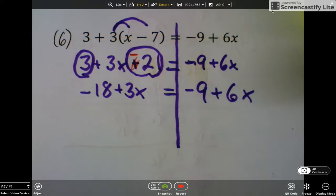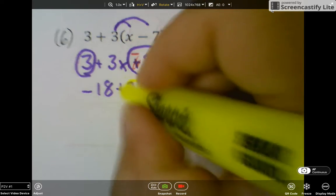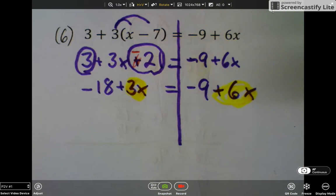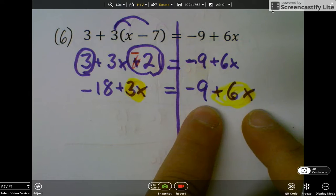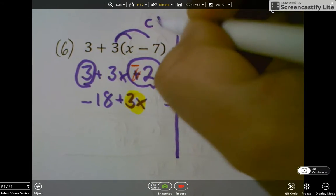Alright, so now the next step I have everything kind of cleaned up. I need to now decide which one's my variable term side and which one's my constant term side. But to do that, I have to look at my variable terms. On this side I have a positive 3x, on this side I have a positive 6x. To decide which one's the variable terms, I look for the one that's bigger. In this case, the 6x is bigger. So I'm going to write variable terms here, constant terms here.